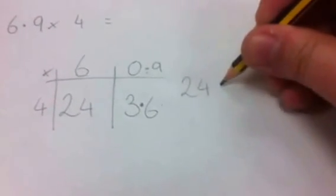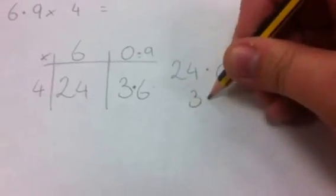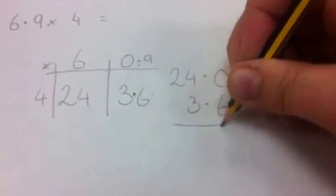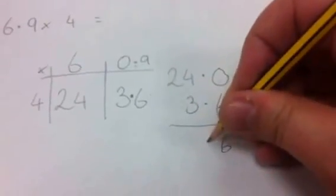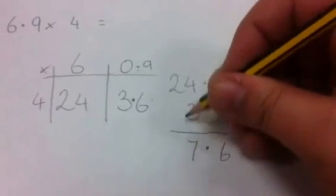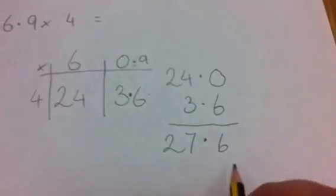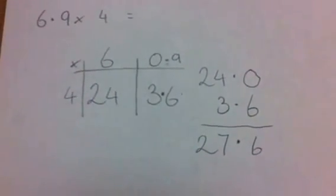So I have 24. I'm just going to put the decimal point in so I know where it is. 3.6. Add them together. Nothing and 6 is 6. Make sure I move the decimal point down. 4 plus 3 is 7, and 2 plus nothing is 2. So we've got 27.6. That's multiplying decimals with the grid method.